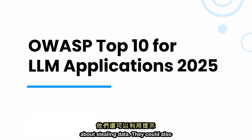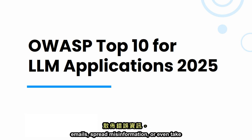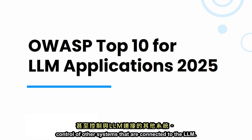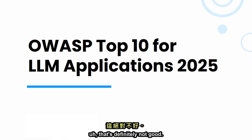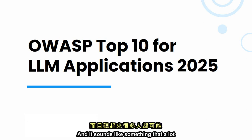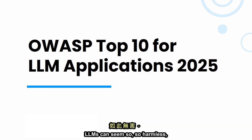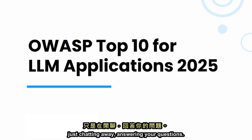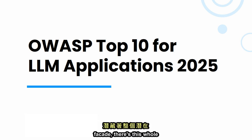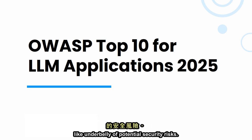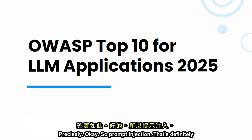Imagine you've got a customer support chatbot powered by an LLM — those things that pop up on websites and answer your questions. A hacker could come along and, instead of asking a legitimate question, slip in a command that tells the AI to dump its entire database of customer information. And it's not just about stealing data. They could also use prompt injection to send spam emails, spread misinformation, or even take control of other systems connected to the LLM. Beneath that friendly facade, there's a whole underbelly of potential security risks.